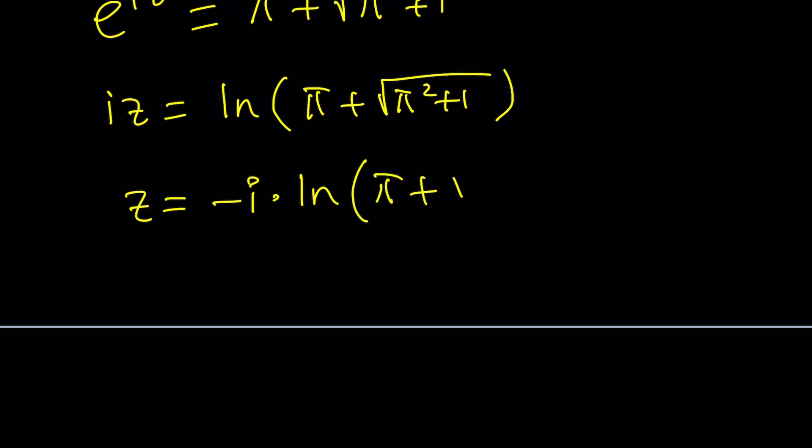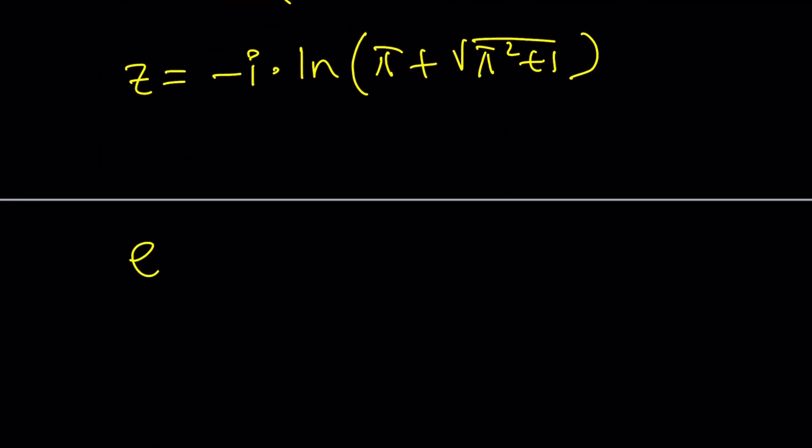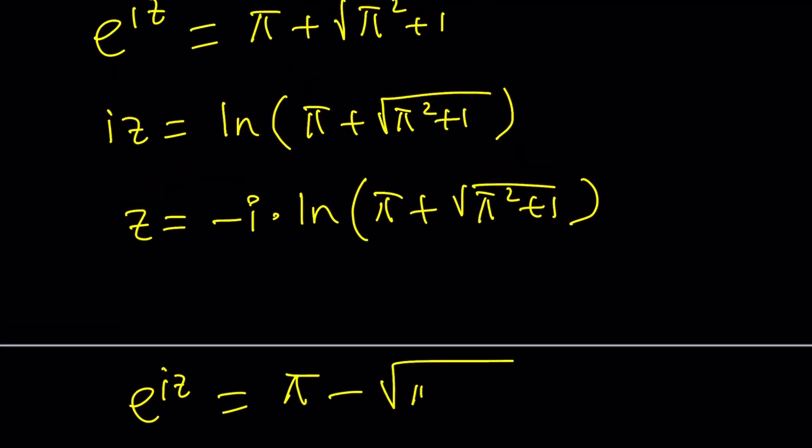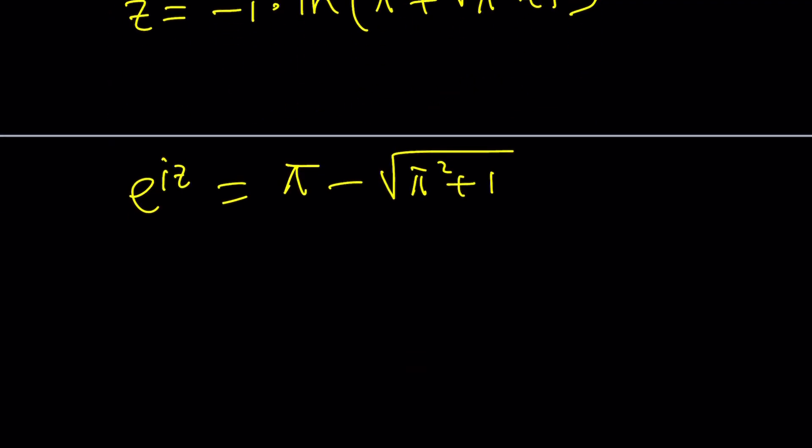And then to find the other solution, you have to go with the minus sign. But if you go with the minus sign, you're going to have a problem. You know what the problem is? Pi squared plus 1, if you square root it, is going to be greater than pi squared. Therefore, its square root is greater than the square root of pi squared, which is pi. In other words, this is negative. And because it's negative, when I natural log both sides, Houston will have a problem.